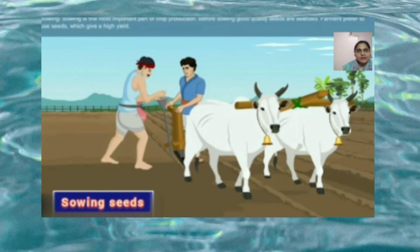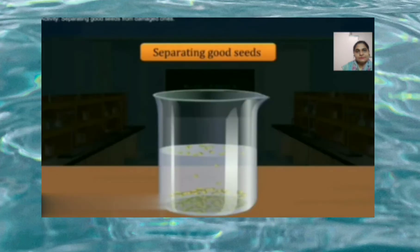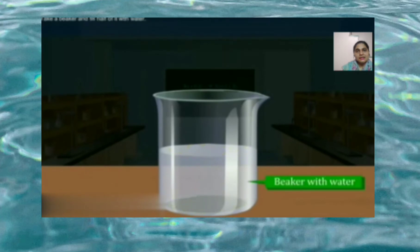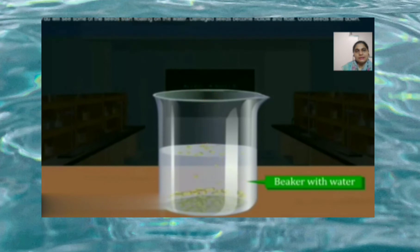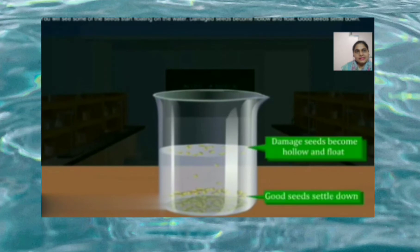Sowing is the most important part of crop production. Before sowing, good quality seeds are selected — farmers prefer to use seeds which give a high yield. In this activity, we learn how to separate good seeds from damaged ones: take a beaker and fill half of it with water, put a handful of gram seeds and stir well. Wait for some time — damaged seeds become hollow and float, while good seeds settle down. This is a good method for separating healthy seeds from damaged ones.